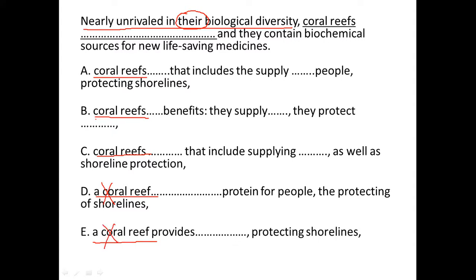Now if you look at the part after the underlined portion, it says and they contain. We use and to join parallel elements, and after and we have they contain, which is a clause — it has a subject and a verb. So the element before and must also be a clause. Now if you look at answer choice A, it says the supply protecting and they contain. These are not parallel: they contain is a clause, but the supply is not a clause, and protecting shorelines is not a clause. So eliminate A.